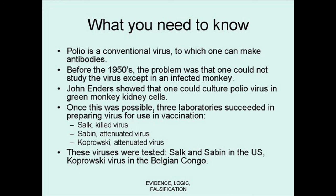Once Enders developed the culturing method, three laboratories started to race to develop the vaccine: the Sabin, Salk, and Koprowski. Ultimately, the government decided to fund the Sabin and Salk types of vaccines. We currently use the Sabin type of vaccine, and Koprowski's was not used in the United States. However, he had connections with the United Nations, and the Koprowski vaccine was tested in the Belgian Congo and in other places, such as Holland and Poland.